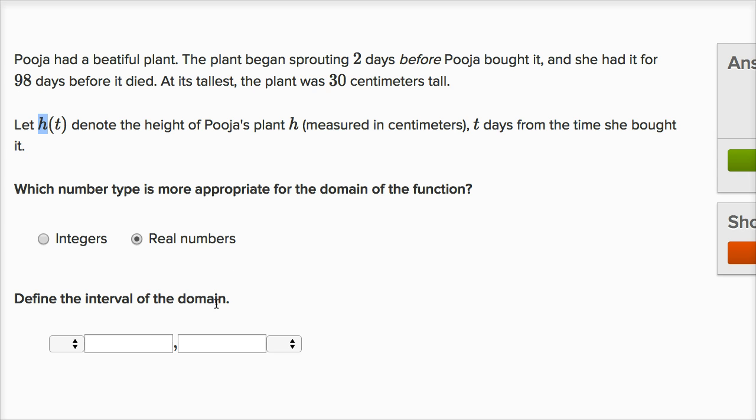They say define the interval of the domain. T would be defined up to two days before she bought the plant. So t equals negative two, all the way to 98 days. T could be equal to negative two, which would be two days before she bought it, or as high as 98.